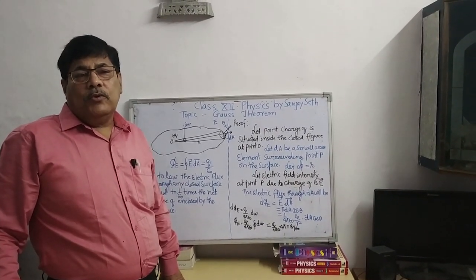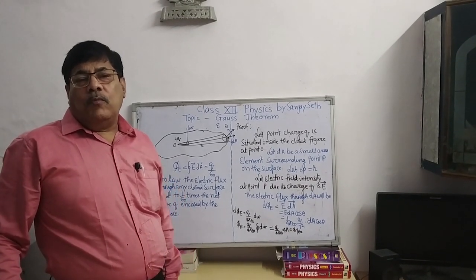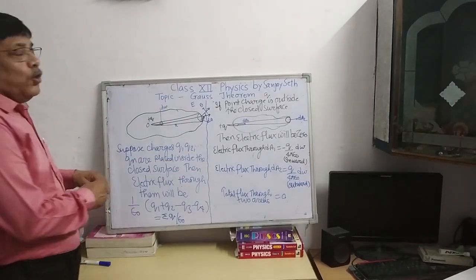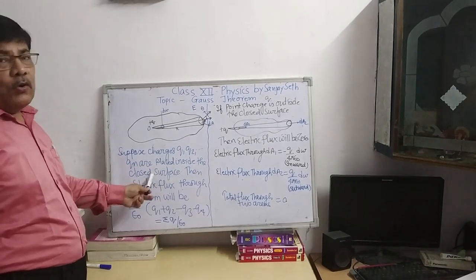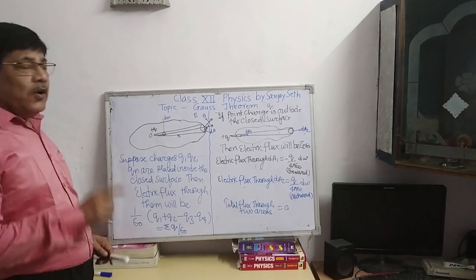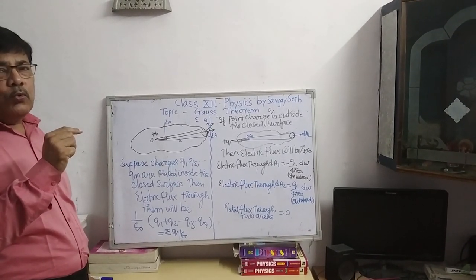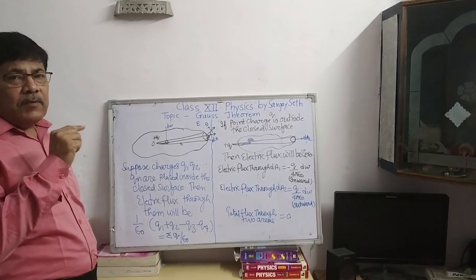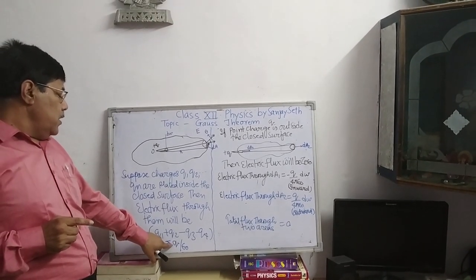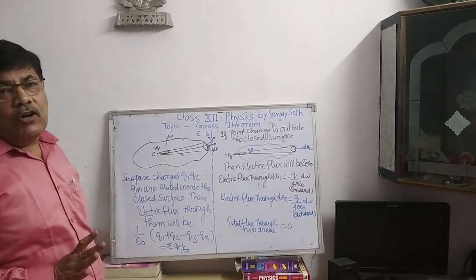Suppose many charges — Q1, Q2, Q3 — are placed inside the closed surface. Then the electric flux through the surface will be 1 upon epsilon naught times the sum of all charges Q1, Q2, Q3. If a negative charge is also present, it will be added algebraically, giving the result as the summation of Q upon epsilon naught. This is Gauss theorem.